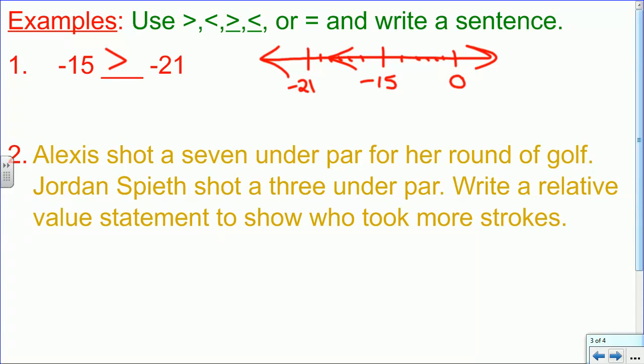Number 2: Alexis shot a 7 under par for her round of golf. Jordan Spieth shot a 3 under par. Write a relative value statement to show who took more strokes. So right now we're using par and their number, or their score in relation to par, and we're going to try and see which is bigger, which is more strokes. If you have a negative 3, 3 under par, or a 7 under par.